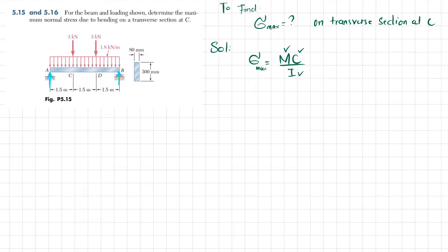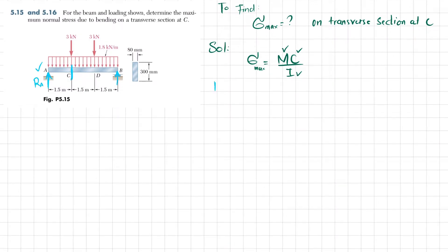Since we are finding the maximum stress at C, the reaction force RA will be sufficient. RA can be found using the equilibrium condition: the sum of all moments about point B equals zero, taking counterclockwise moments as positive.